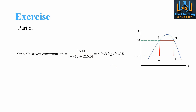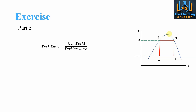The specific steam consumption is 3600 divided by the net work, giving 4.968 kg/(kW·h) — the amount of steam consumed to achieve this thermodynamic cycle. The work ratio is the net work divided by the turbine work, giving 0.77, or a 77% work ratio, indicating how much useful output we achieve relative to the turbine's gross output.